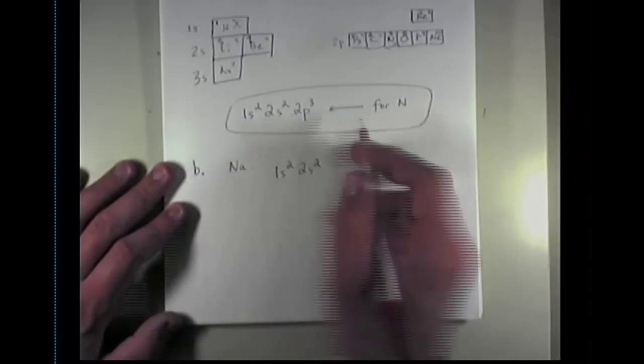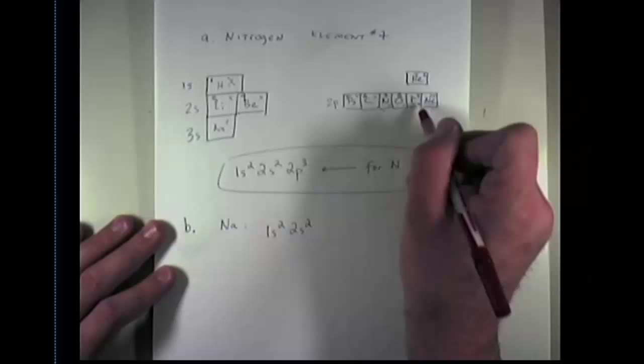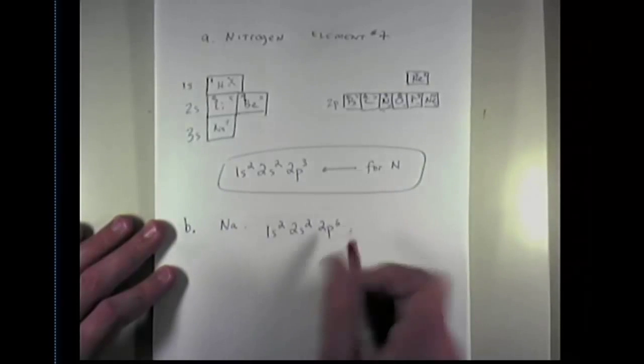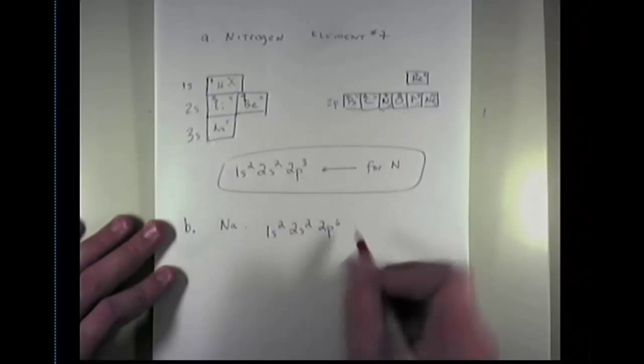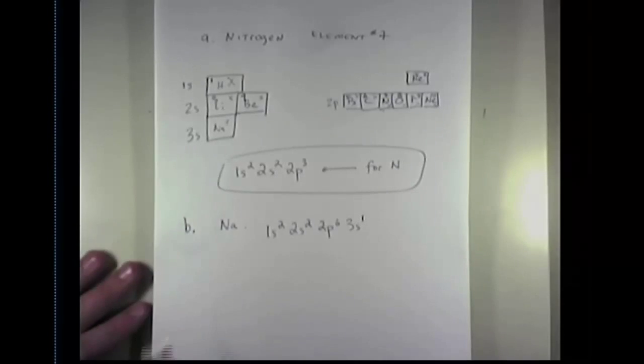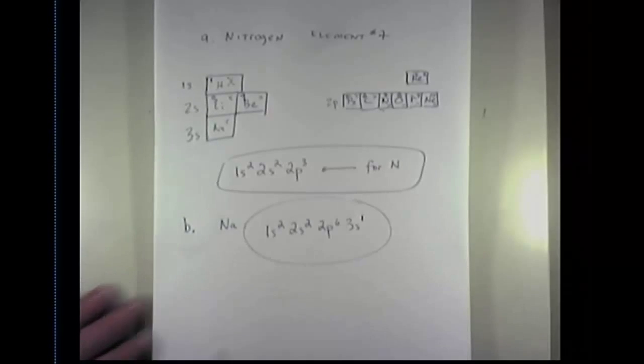What that means is that sodium has the electron configuration 1s2, 2s2, and in the 2p block, I count 1, 2, 3, 4, 5, 6, 2p6, and then as I go back here to the 3s, sodium is the first element in the 3s row. So I'll let you guys do the final question in this set, coming up with the electron configuration for phosphorus.